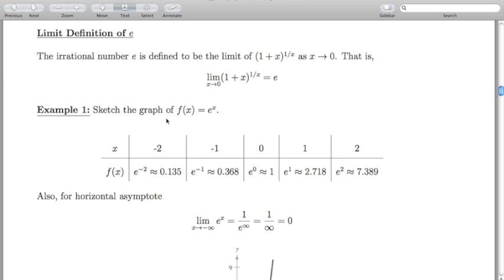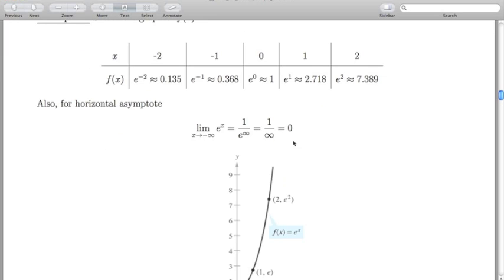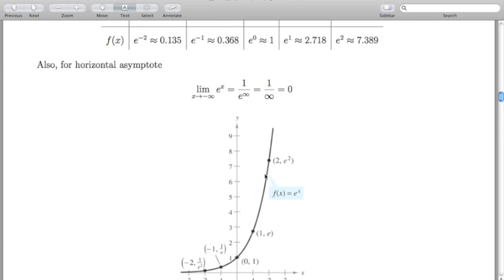If we want to sketch the graph of e to the x, we're doing a point plotting method. We're going to choose some x values and find the corresponding y's. When x is minus 2 and so on, here are your corresponding approximations for e. With this notion we can talk about a horizontal asymptote. As x goes to positive infinity this blows up to infinity, so going off to the right of the graph, the function goes off to infinity.